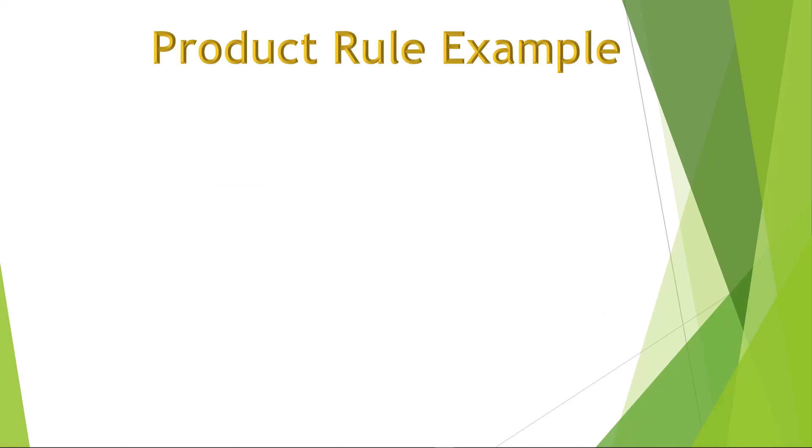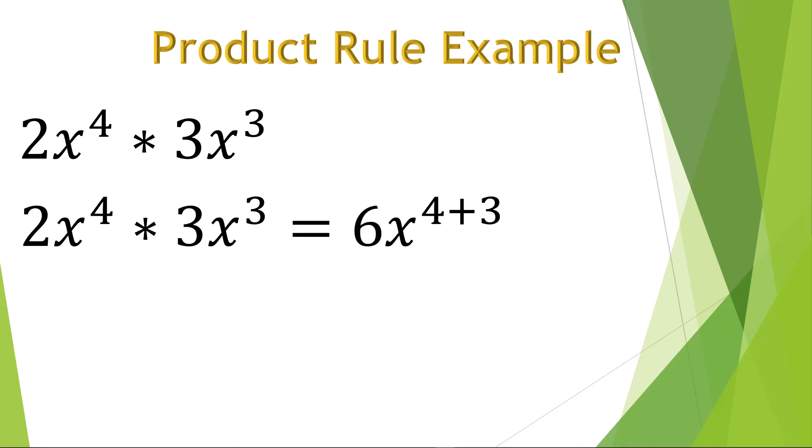Let's look at an example. Here are two powers with x as the base, which also contain coefficients. The coefficient values simply multiply as usual, with 2 times 3 equal to 6. But the power uses the base x with the sum of the two exponents, 3 plus 4, with the final result of 6x to the 7th power.